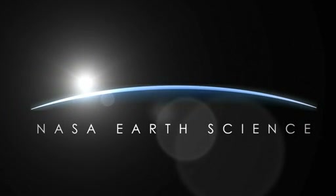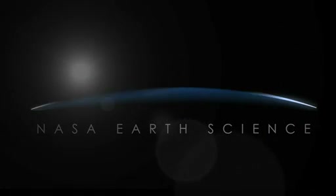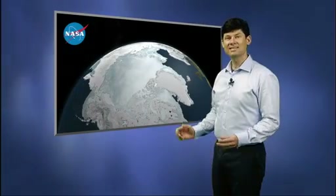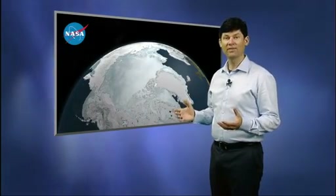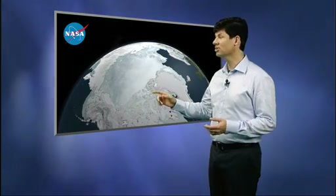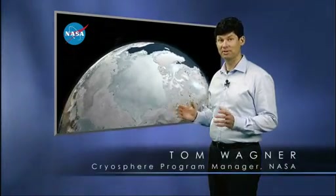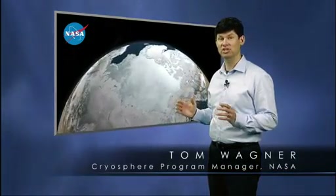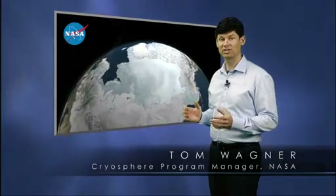Dr. Wagner, can you tell us exactly what sea ice is and what's new about it this year? Sea ice is the ice that forms on the ocean in the winter months. And the image you're looking at right here is a picture of the top of the planet. Not a model, not a simulation, not an artist's impression, but this is actual data from a satellite showing us the sea ice cover on the Arctic Ocean.